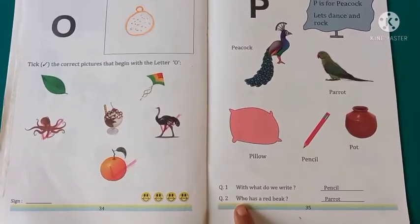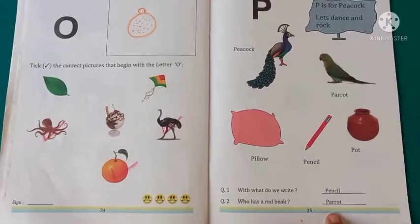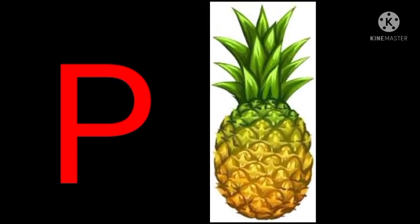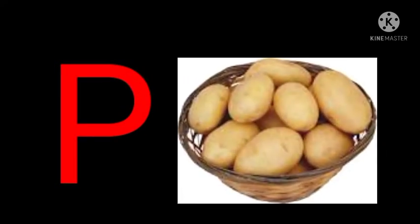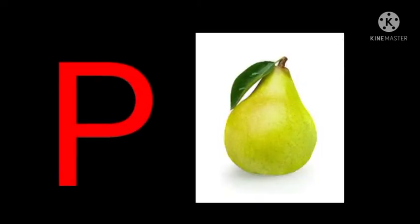Question number two: Who has a rat beak? Parrot. Now let's see some more objects related to letter P: P for pig, P for pigeon, P for pineapple, P for pumpkin, P for potato, P for popcorn, P for pizza, P for pear.